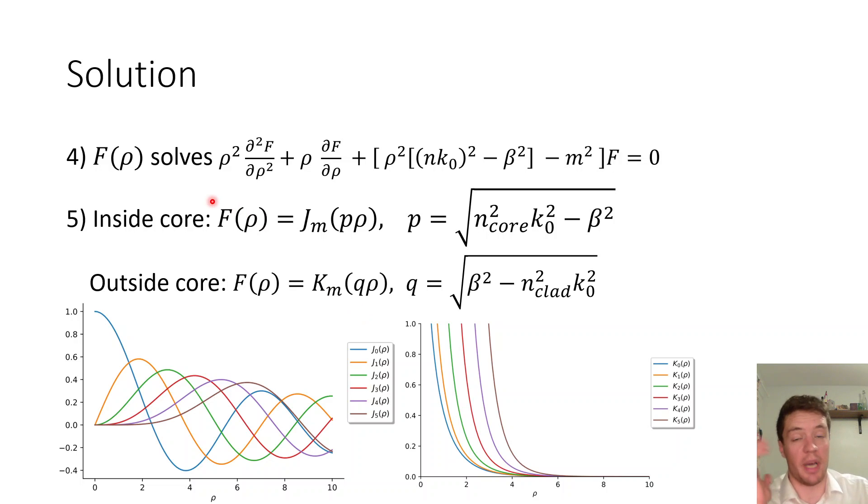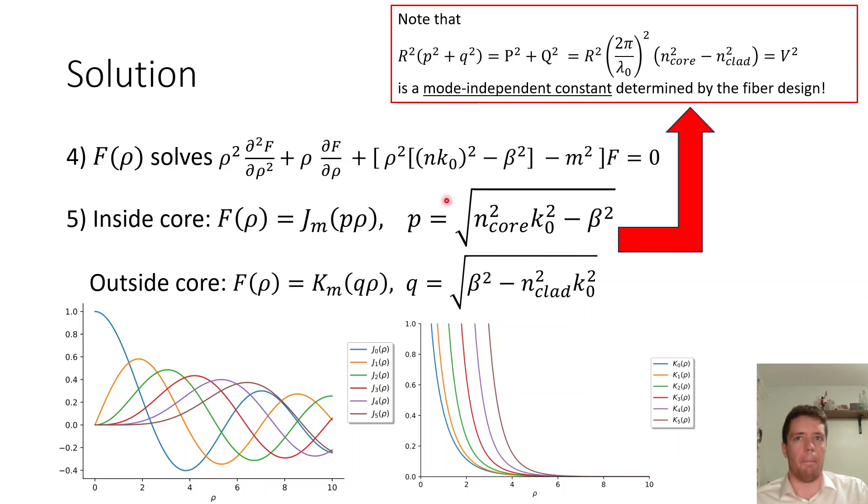So what we can do for the radial part of the field is to notice that it has to satisfy a Bessel equation, so inside of the core we get a regular Bessel function of the first kind which oscillates inside of the core depending on the value of p we have while outside the core we get a modified Bessel function of the second kind I believe that decays exponentially with this q parameter here being the decay rate and notice that it depends on the value of the propagation constant as we move forward in the z direction. We can also note that if we multiply by r and square and then add the results together we get a parameter called v or v squared rather.